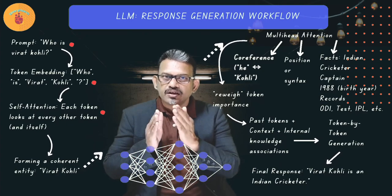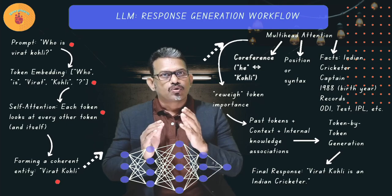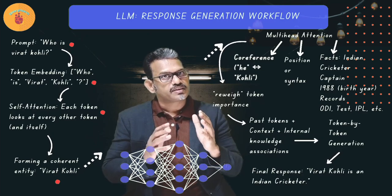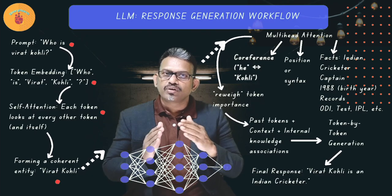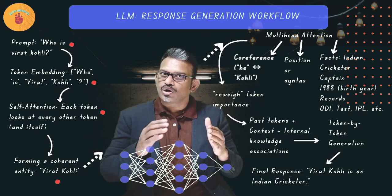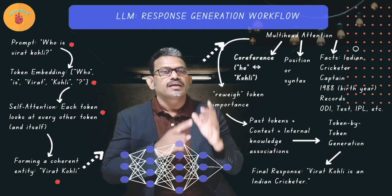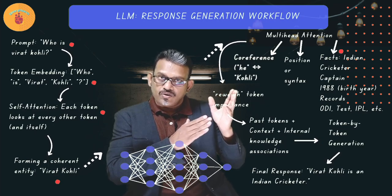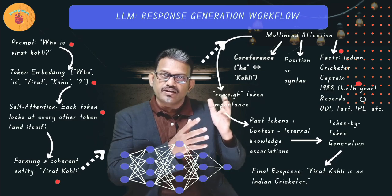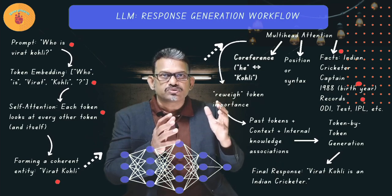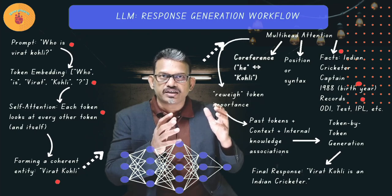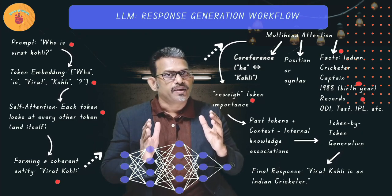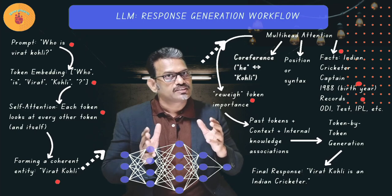That is the model uses a mathematical process to understand the importance of each word relative to the others. The tokens Virat and Kohli strongly attend to each other, forming a coherent entity Virat Kohli. Layer wise composition progresses. As we go up the layers, attention heads build more abstract representations. In middle to later layers, the model learns to associate Virat Kohli with related facts like Indian, cricketer, captain, 1988 birth year, records, ODI, test, IPL, etc. All facts about Virat Kohli. These associations emerge because attention directs the model to re-weigh importance across the training tokens, and those patterns which shaped the weights during pre-training.